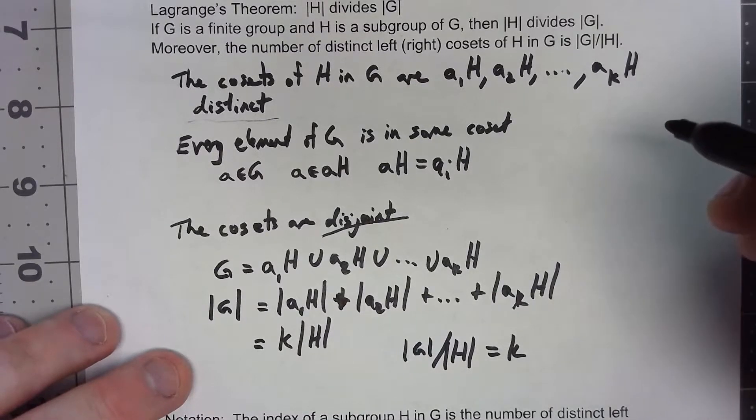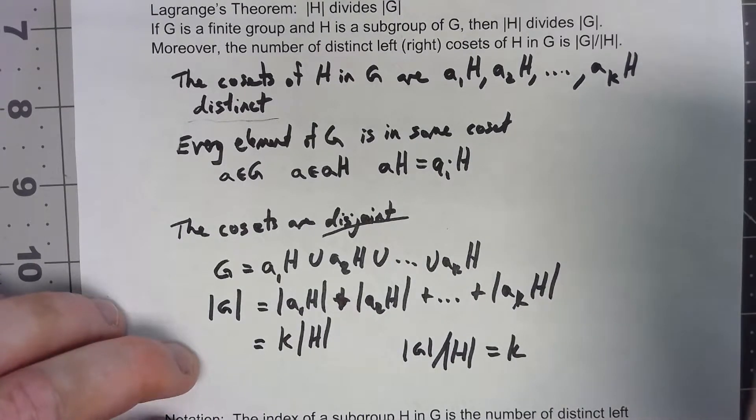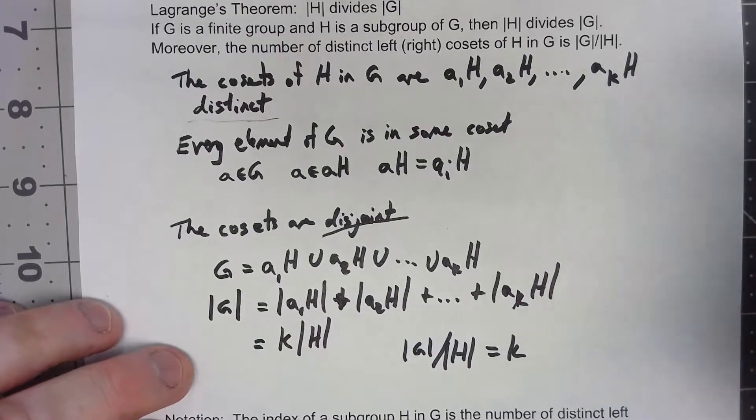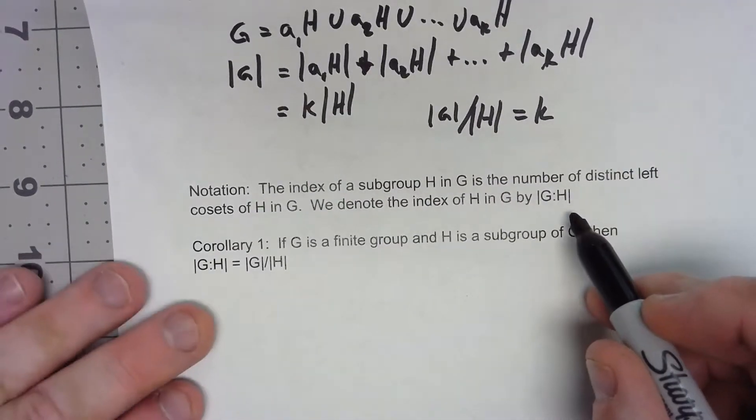So there we are. This idea of the number of cosets is an important thing for many different things as we go on, so we're going to come up with a little bit of notation there.